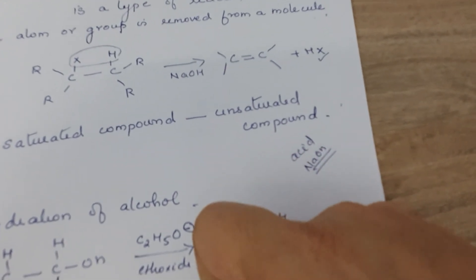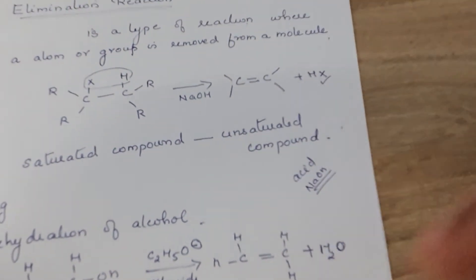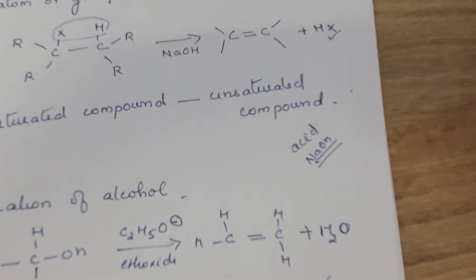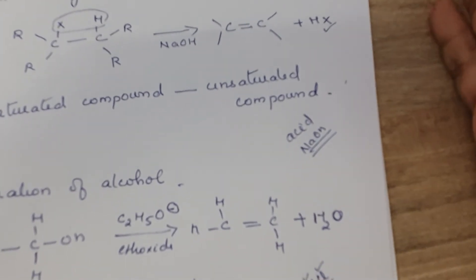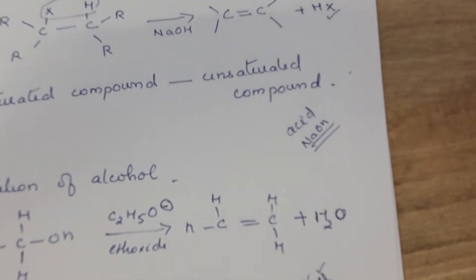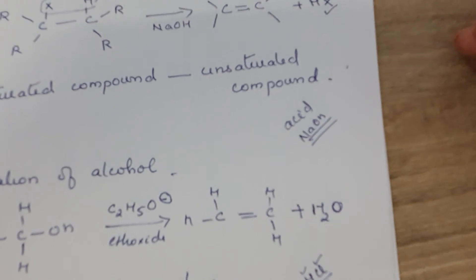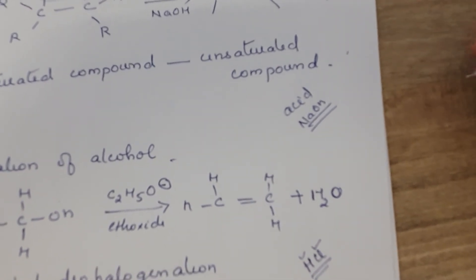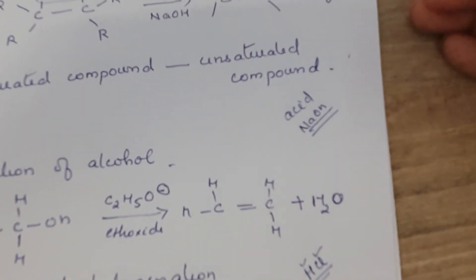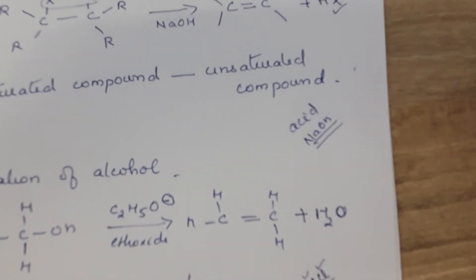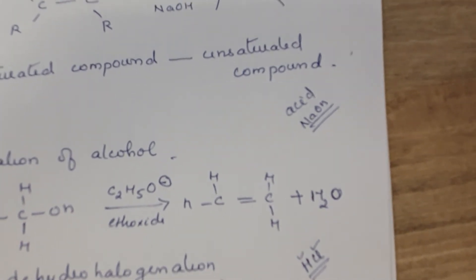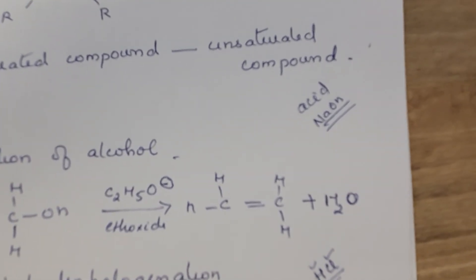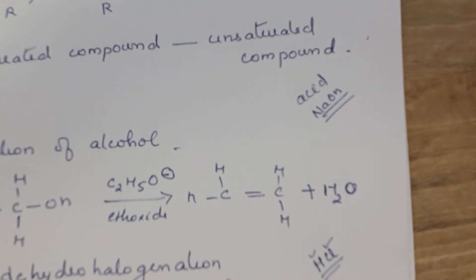So elimination reaction is a type of reaction where an atom or group is removed or eliminated from a molecule — a saturated compound is converted to an unsaturated compound. These are the three main types of reactions: substitution (one group substituted by another), addition (an attacking agent adds to the substrate), and elimination (a group is removed). Study well — write down the reactions.